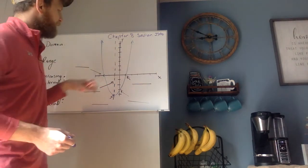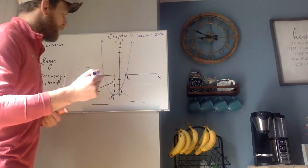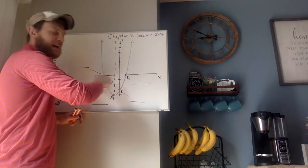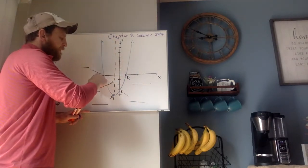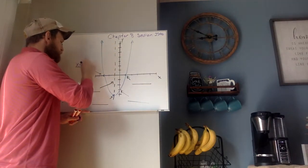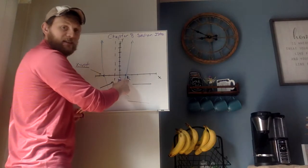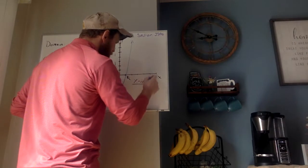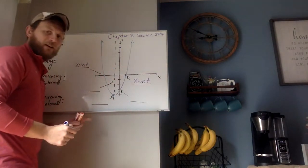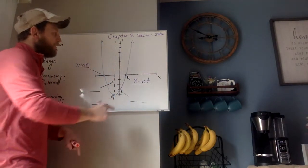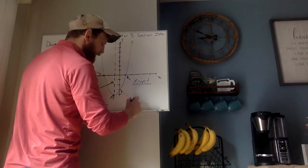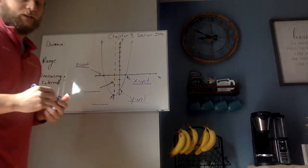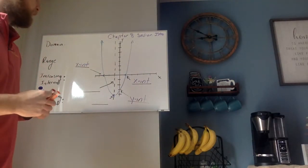We have our y-axis and x-axis. Notice this is my x-axis and this is my graph — that point right there is an x-intercept. Likewise, that is also an x-intercept because my graph is going through the x-axis. Over here, my graph goes through the y-axis, so that's my y-intercept.